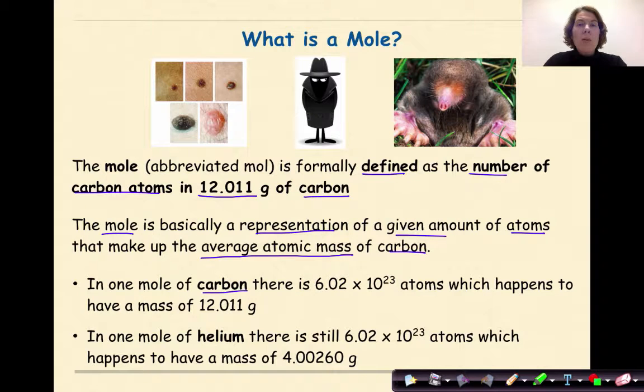In one mole of carbon, there are 6.02 times 10 to the 23rd atoms, which happen to have a mass of 12.011 grams. In a mole of helium, there is still 6.02 times 10 to the 23rd atoms, which happen to have a mass of 4.00260 grams.